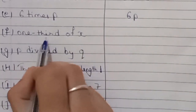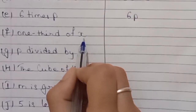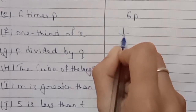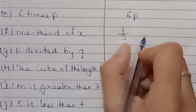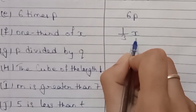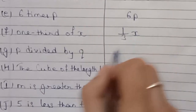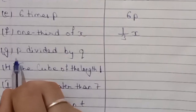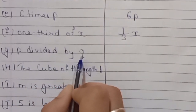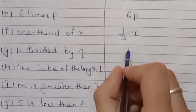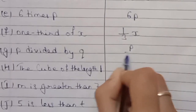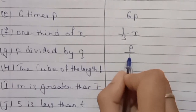F: 1 third of x. We will write 1 by 3, and for 'of' we won't put a multiplication sign, just write x directly: 1/3 x. G: p divided by q. You can write this in symbols as p by q, simply p by q.